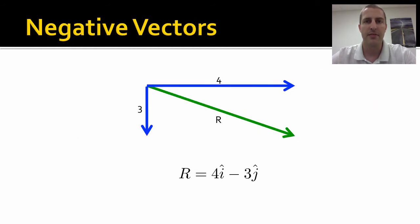We can also represent negative vectors. So if we take the 3 in the j direction, and move it so it's pointing negatively, we would change our r to be 4i minus 3j. That is a complete representation of a vector.